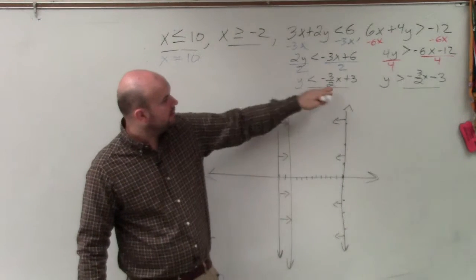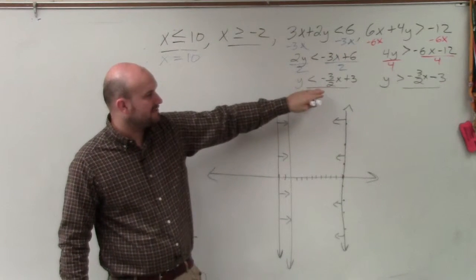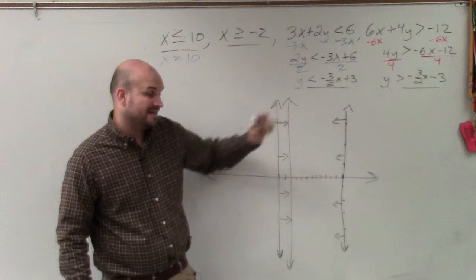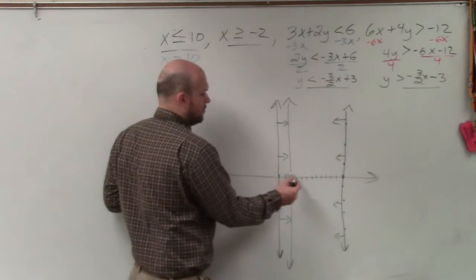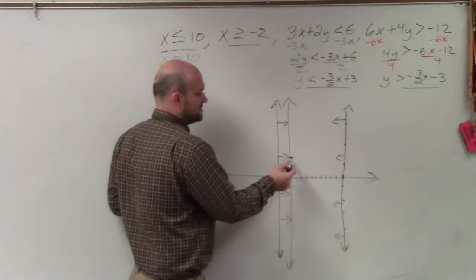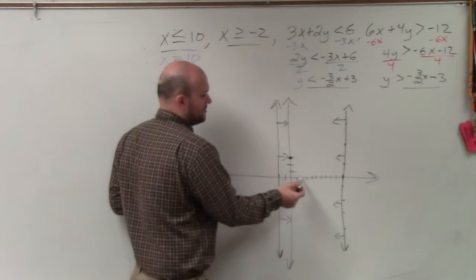Then we graph the next one. y is less than negative 3 halves x plus 3. Again, we need to find the y-intercept at 1, 2, 3. And the slope tells us to go down 3 to the right 2.